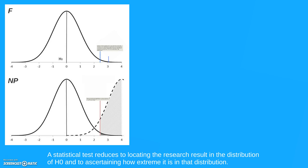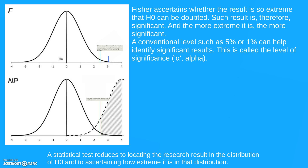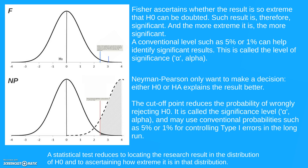The statistical test reduces to locating the research results in the distribution of the null hypothesis, and ascertaining how extreme the research results fall into that distribution. Fisher ascertains when a result is so extreme that you could doubt the null hypothesis — and therefore this result is significant. The more extreme, the more significant it is. He uses conventional levels like 5% or 1% to help identify significant results, and called it the level of significance. Neyman-Pearson only wants to make a decision — either the null hypothesis or the alternative hypothesis explains the research results better. Therefore, the cutoff point reduces to a probability of wrongly rejecting the null hypothesis: a type 1 error.